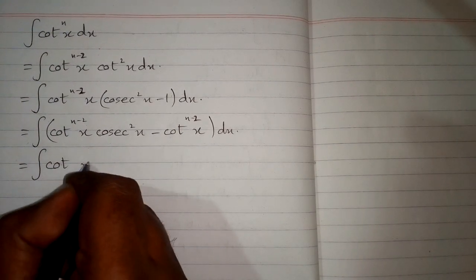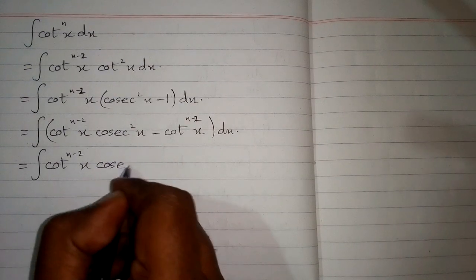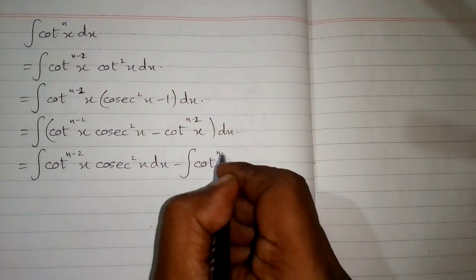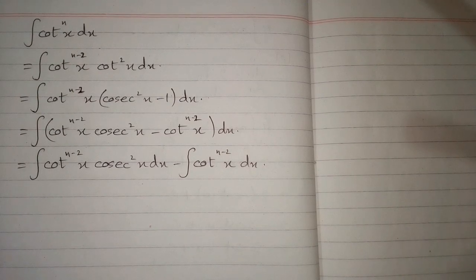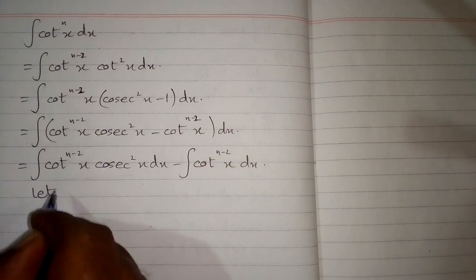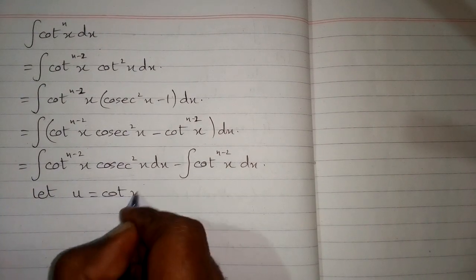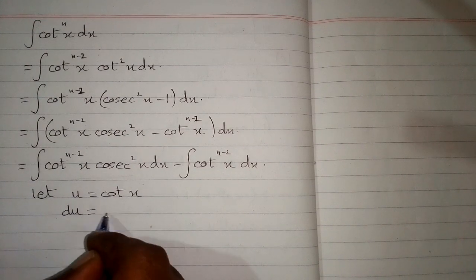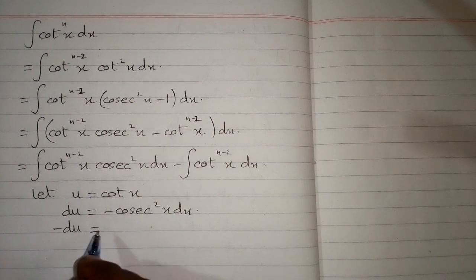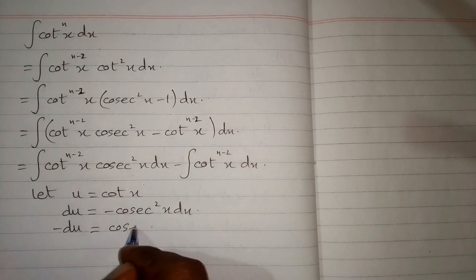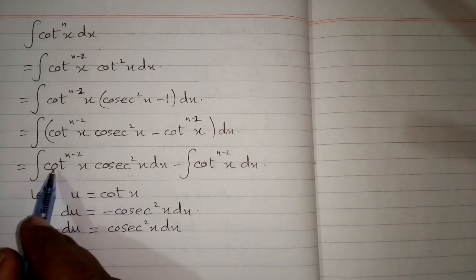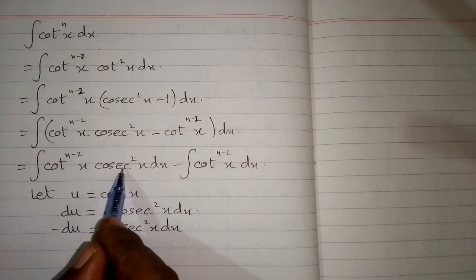So we have the integral of cot(x) to the power n minus 2 times csc²(x). To integrate this, let u equal cot(x), so du equals minus csc²(x) dx, which means minus du equals csc²(x) dx.